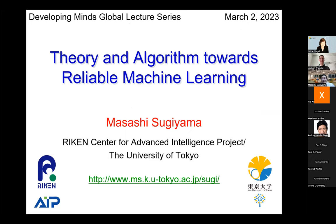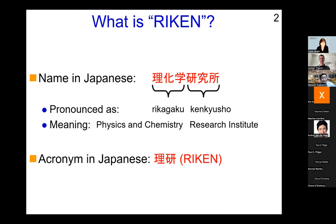The University of Tokyo is well known, but Riken is a national research center in Japan. In Japanese, Riken is written with six characters, pronounced as Rikagaku Kenkyū Shō, which literally means Physics and Chemistry Research Institute. Six characters are too long, so we shorten it — we take two characters, pronounced as Riken. Previously it was called Research Institute for Physics and Chemistry, but now Riken is the official name of our center.